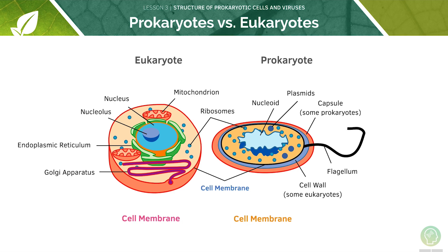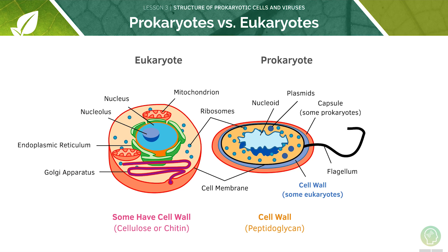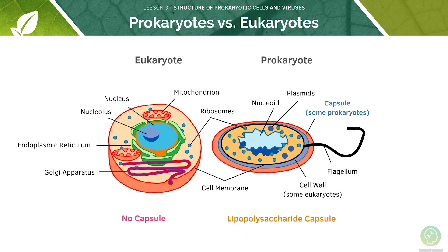Both will also have a cell membrane. However, only some eukaryotes have a cell wall whilst all prokaryotes will, and this cell wall is made of peptidoglycan. Prokaryotes will have a capsule whilst eukaryotes do not. The final difference is that all prokaryotes will have a flagella whilst only some eukaryotes will.